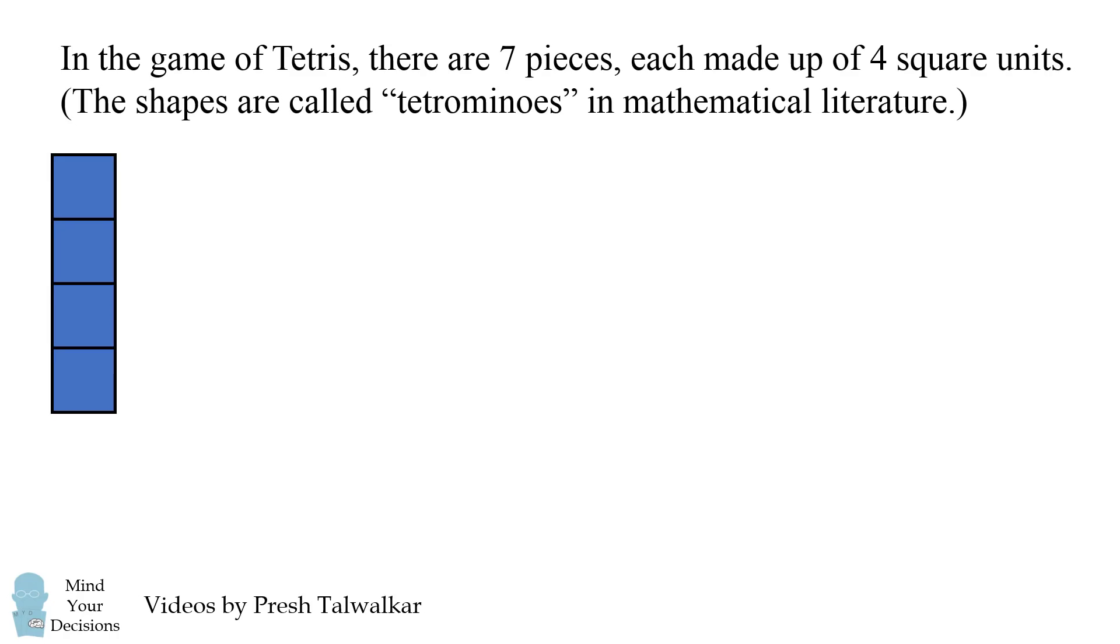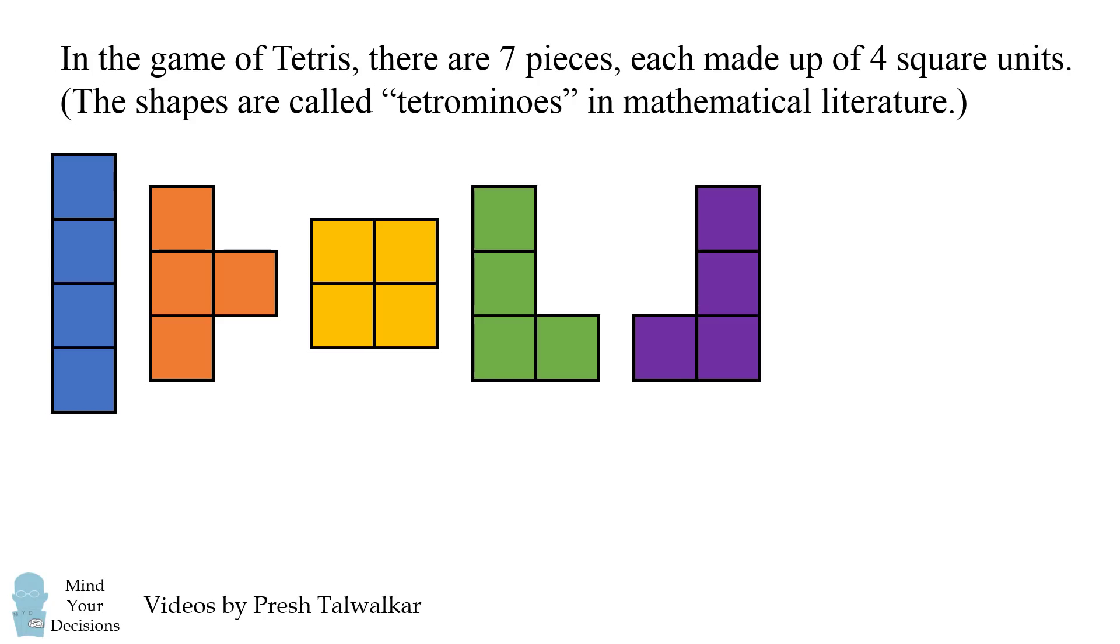In the game of Tetris there are seven pieces each made up of four square units. The shapes are called tetrominoes in mathematical literature.